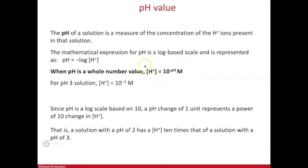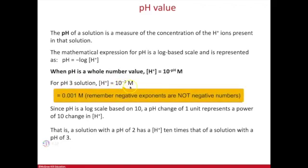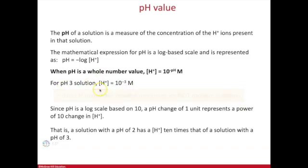For a pH 3 solution, this 3, the whole number pH value, becomes the exponent 3, or 10 to the minus 3 is the concentration in molarity of the hydrogen ion in this solution.